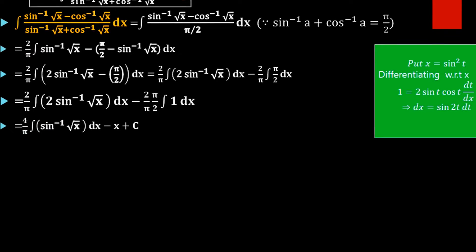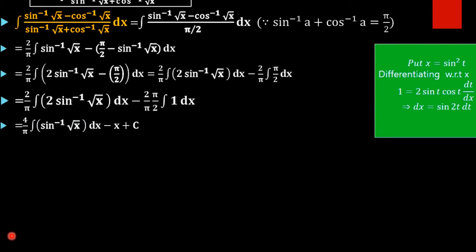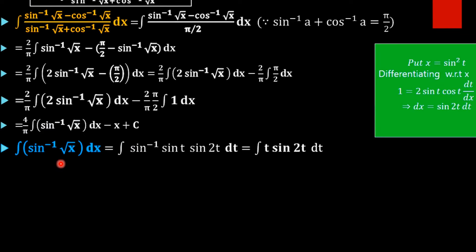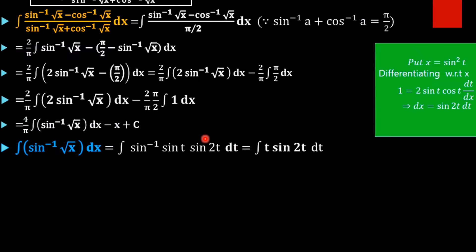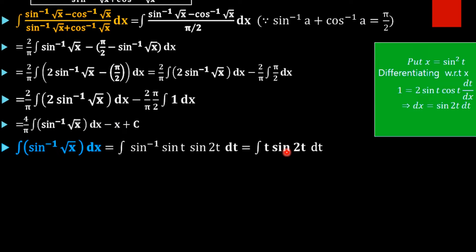On substituting: x is sin squared t, so root x is sin t; dx is sin 2t dt; and sin inverse of sin t gives t. So the integral of sin inverse of root x dx becomes the integral of t times sin 2t dt, which is now in a standard integrable form, so we use integration by parts.